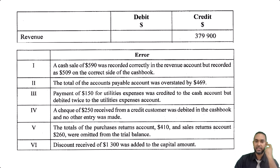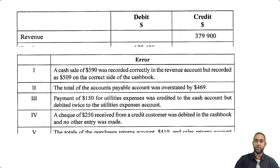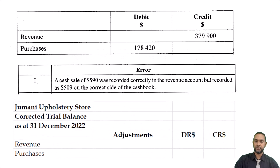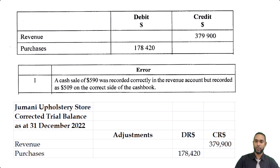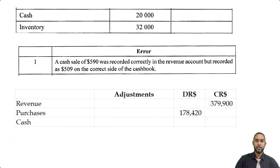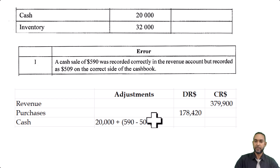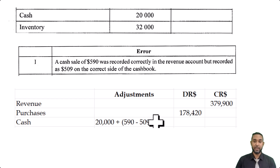Now let's correct the trial balance from the top. Revenue figure was correct at $370,900. Purchases also had no adjustment. The cash figure started at $20,000, but we had to add the $81 — that is, $590 minus $509 — giving us $20,081.